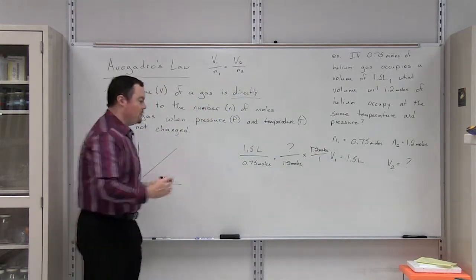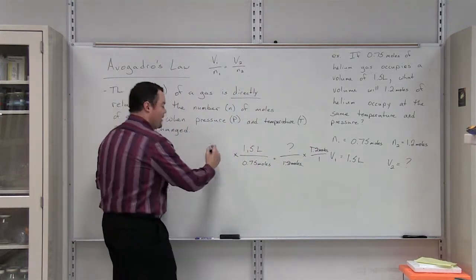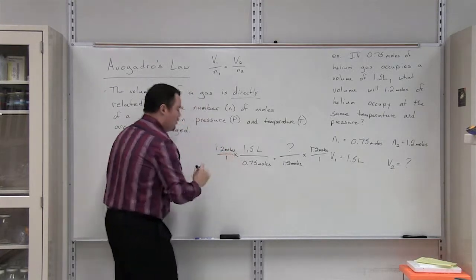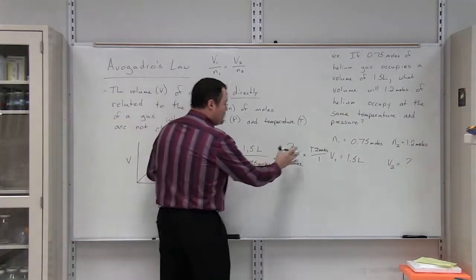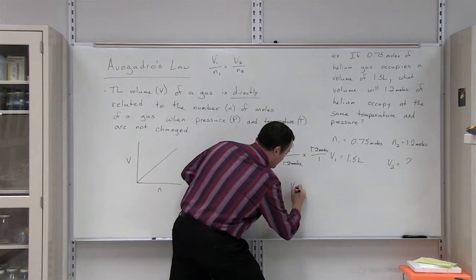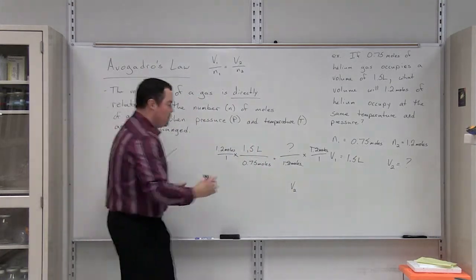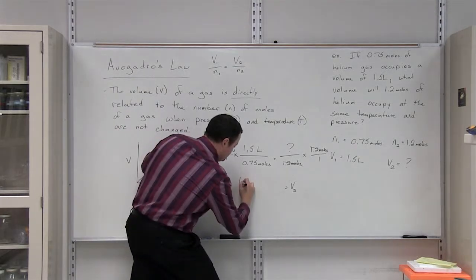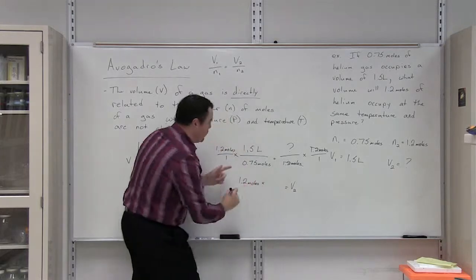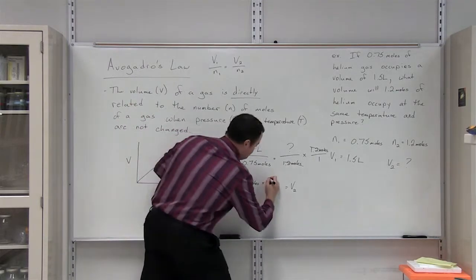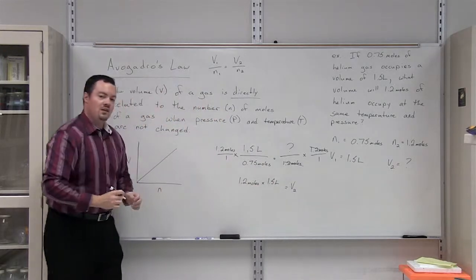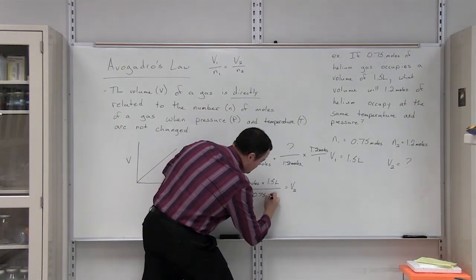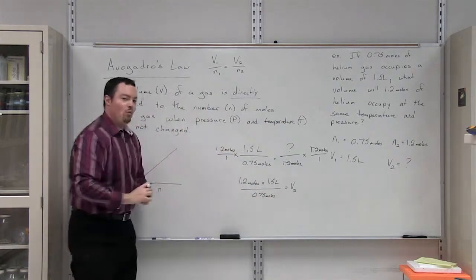What we do to one side, we have to do to the other side of the equal sign, so we are going to multiply this side by 1.2 moles over 1. So what this tells us is that V2, the variable that we are solving for, is going to be equal to 1.2 moles multiplied by 1.5 liters, and then we are going to divide that all by 0.75 moles.